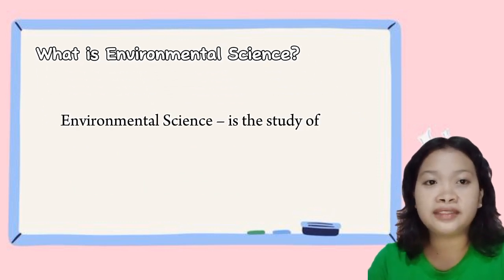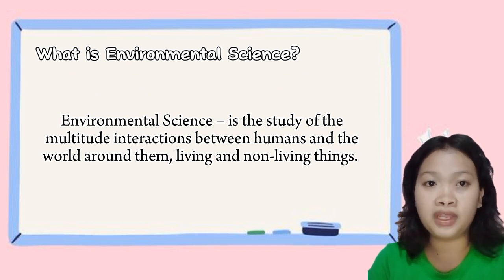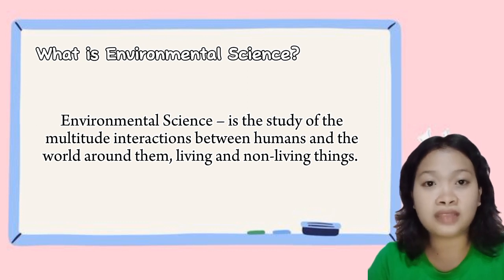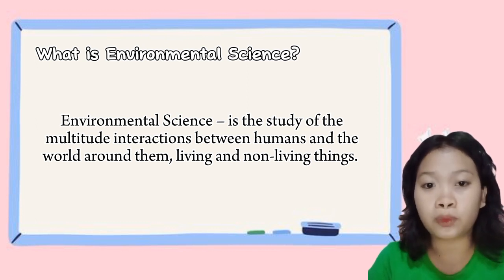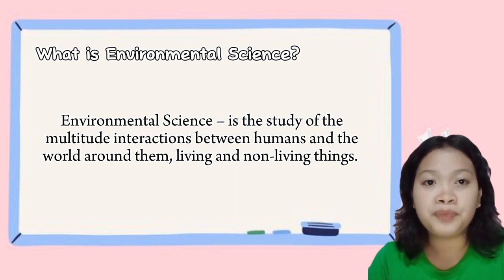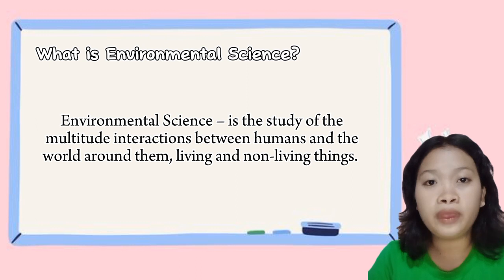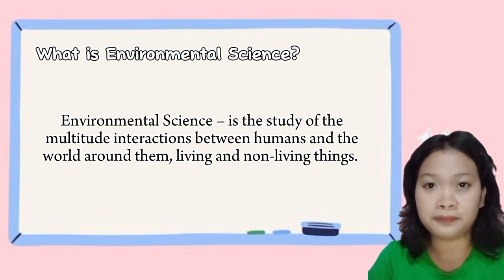Environmental science is the study of the multitude of interactions between humans and the world around them, living and non-living things. So environmental science is the study of how humans interact with the world around us, including both living and non-living things. This field of study is important for understanding how our actions affect the environment and how we can work to protect and preserve it.